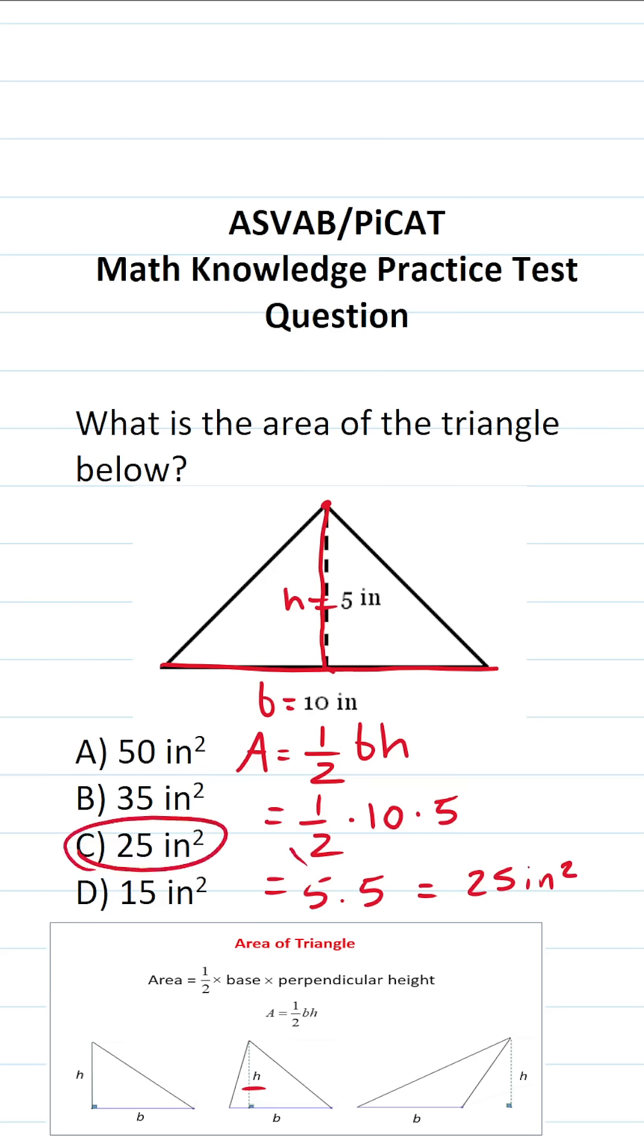Now, if you couldn't do one-half times 10 mentally, let me do that off to the side. We have one-half times 10. You could write 10 as a fraction by placing it over 1. 10 divided by 1 is 10. When you multiply fractions, you multiply straight across. 1 times 10 is 10. 2 times 1 is 2. 10 divided by 2 is 5. So that's how I got this 5 here mentally.